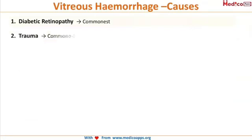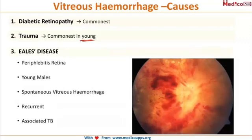Now let's look at the different causes of vitreous haemorrhage. The first and commonest cause is diabetic retinopathy. Next is trauma — it can be blunt or perforating — which can result in vitreous haemorrhage. In young people, whenever there is a vitreous haemorrhage in a young non-diabetic patient, you suspect trauma. However, if there is no history of trauma, we have a third condition called Eales disease.